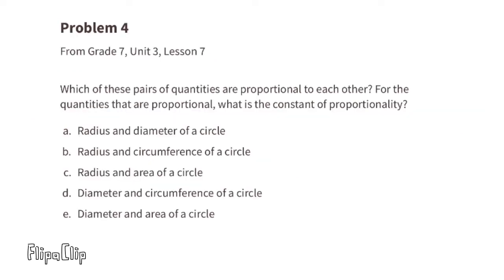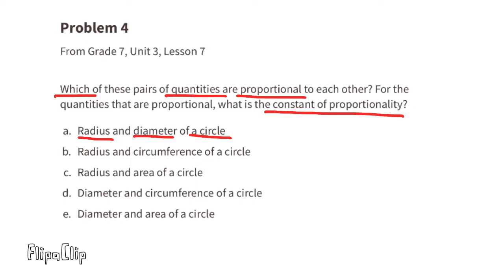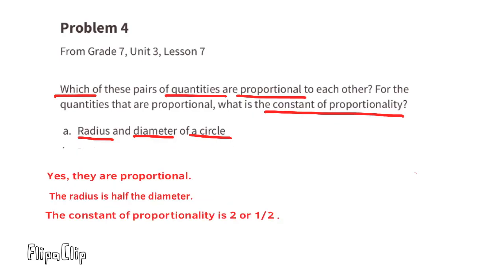Problem number four, from seventh grade Unit 3, Lesson 7: which of these pairs of quantities are proportional to each other, and what is the constant of proportionality? Part A: radius and diameter of a circle — yes, they're proportional. The radius is always half the diameter; the constant of proportionality is 2 or one-half.